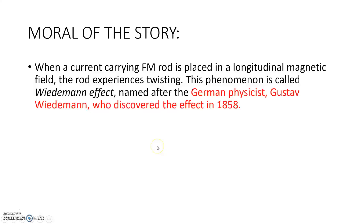The moral of the story: when a current-carrying ferromagnetic rod — FM means ferromagnetic material here, not frequency modulation — is placed in a longitudinal magnetic field, the rod experiences twisting. This phenomenon is called the Wiedemann effect, named after German physicist Wiedemann who discovered this effect in 1858. So to summarize: current creates a circular magnetic field; a nearby permanent magnet creates an axial magnetic field; both fields combine and result in a twist in the ferromagnetic substance — that is the Wiedemann effect.